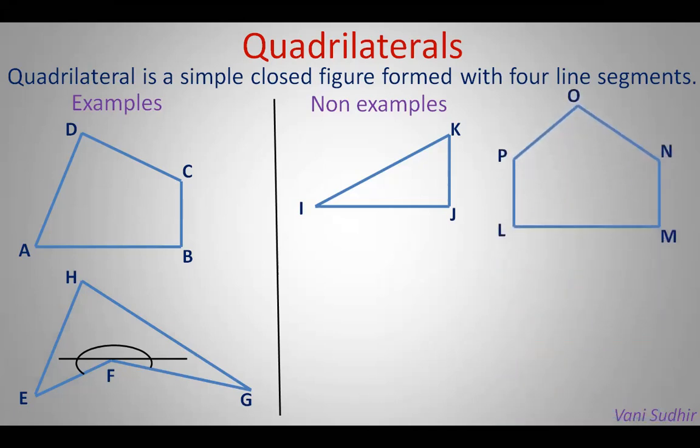One more polygon: L-M-N-O-P. It is a polygon with 5 sides, so it is also not a quadrilateral. We should have exactly 4 sides — only then it is a quadrilateral. A polygon with 5 sides is called a pentagon.